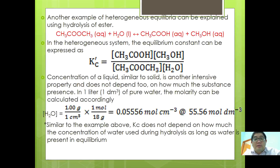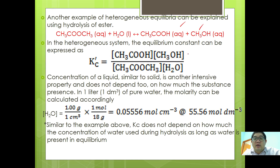Another example is heterogeneous equilibria explained by the hydrolysis of an ester. Methyl ethanoate reacts with water to form ethanoic acid plus methanol. In the heterogeneous system, the equilibrium constant is expressed as Kc0 equals [ethanoic acid] times [methanol] over [ester] times [water]. The concentration of a liquid, similar to a solid, is also an intensive property.